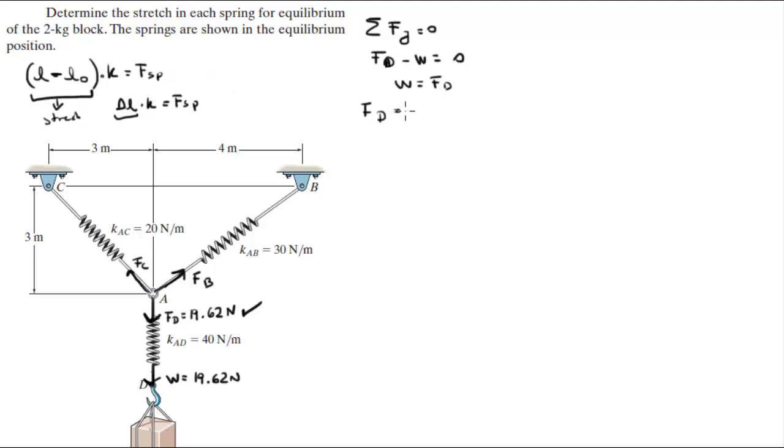Now, F_sB is equal to K times ΔL, which is the stretch, since K is 40 and D is 19.62. So 19.62 is equal to 40 times ΔL.